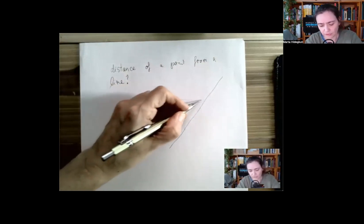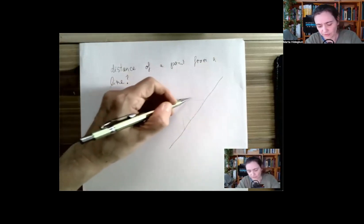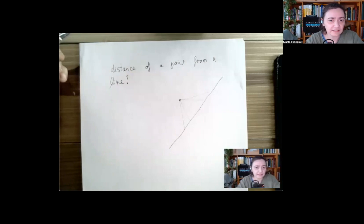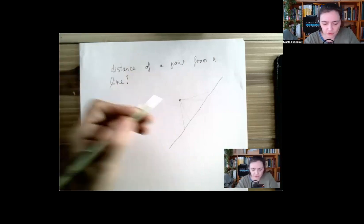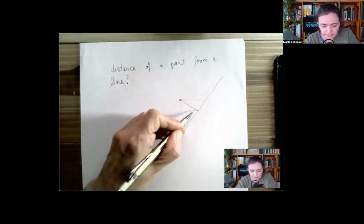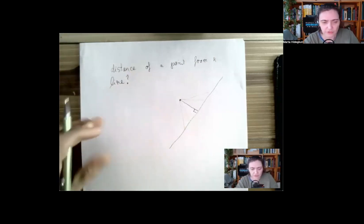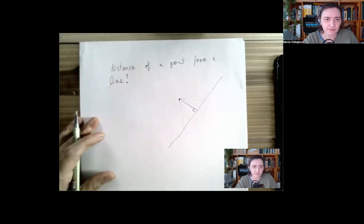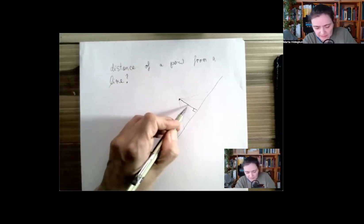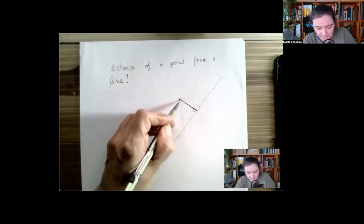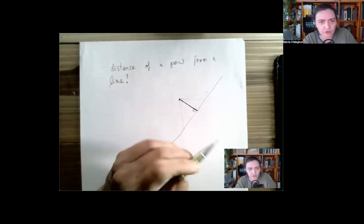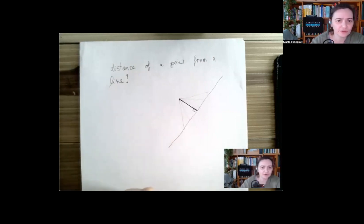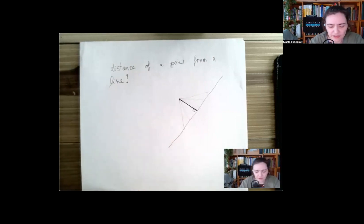We could go from the point to a point on the line in many different ways, but let's pick the shortest one, which is the perpendicular. So the distance between a point and the line is defined to be the shortest distance — the perpendicular.